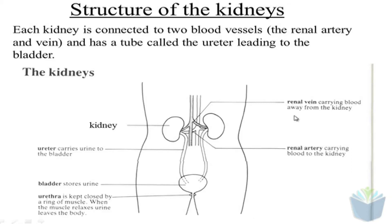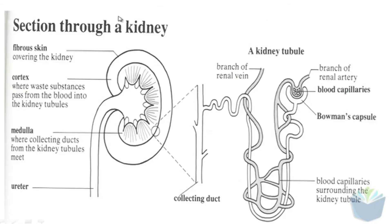If we then look at a cross-section of the kidney, you can see one individual kidney, and you can see it's basically split up into two parts. You've got the outer part, which is known as the cortex, and you've also got the inner part, which is known as the medulla.